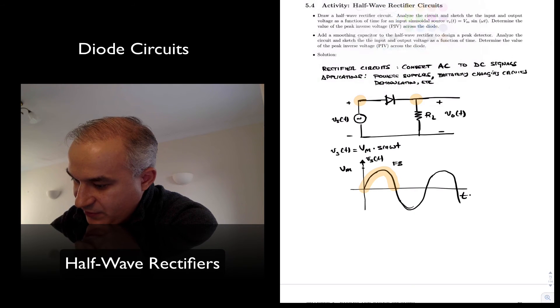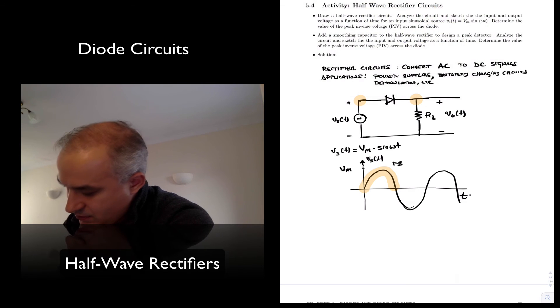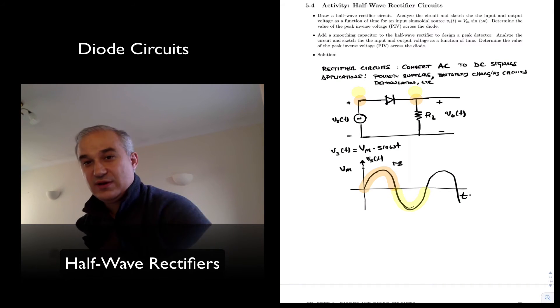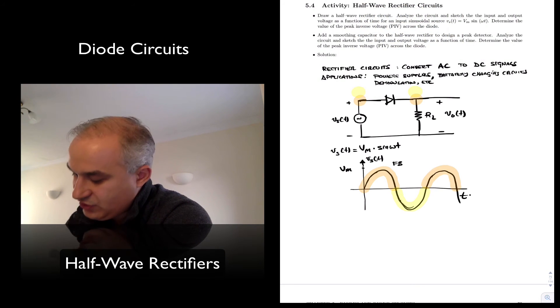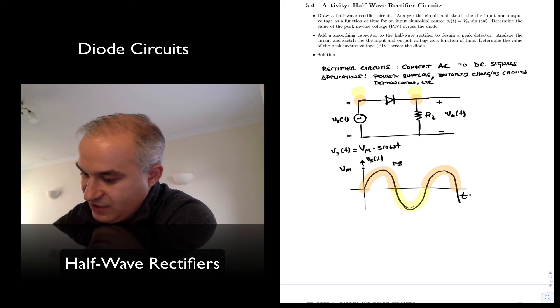And then we have another region where this happens, and you have now the N-region more positive than the P-region, and the diode is going to be open. And then this repeats again. So if you were to use the ideal diode model, what you find...